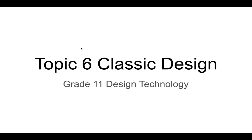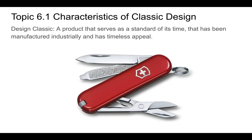This is topic six, looking at classic design. The first topic is characteristics of a classic design. A design classic is a product that serves as a standard of its time, has been manufactured industrially, and has a timeless appeal. A little Swiss army knife is a classic example — basically unchanged for decades, making it iconic.